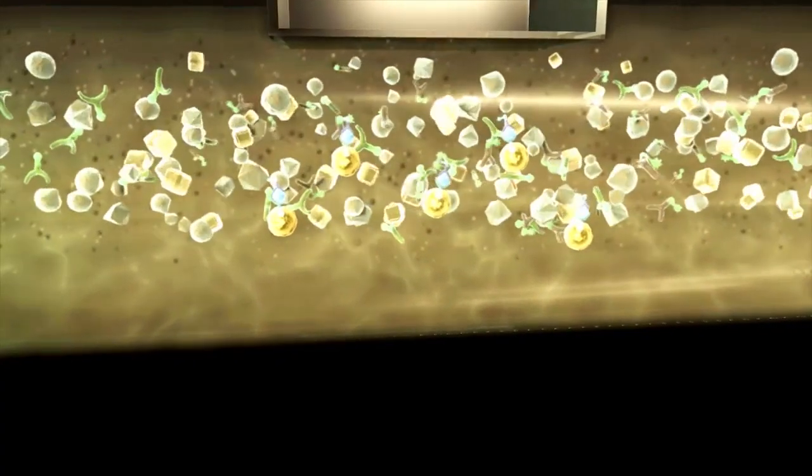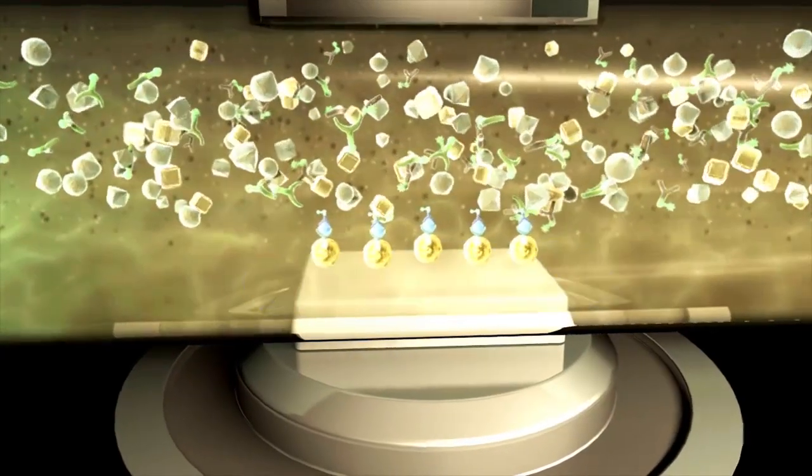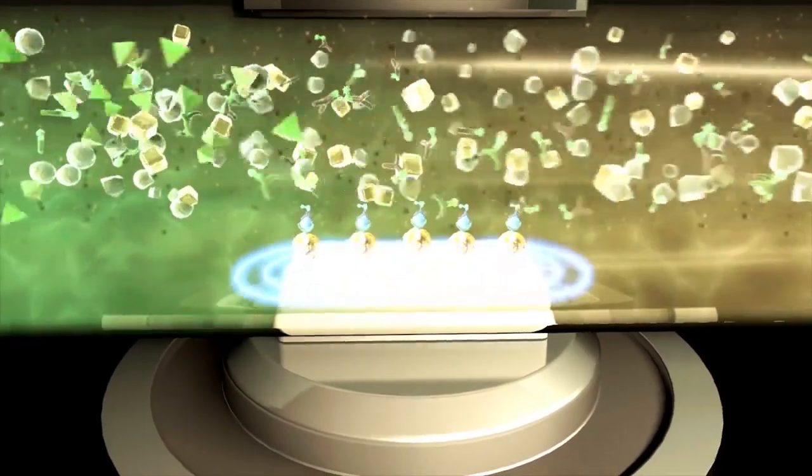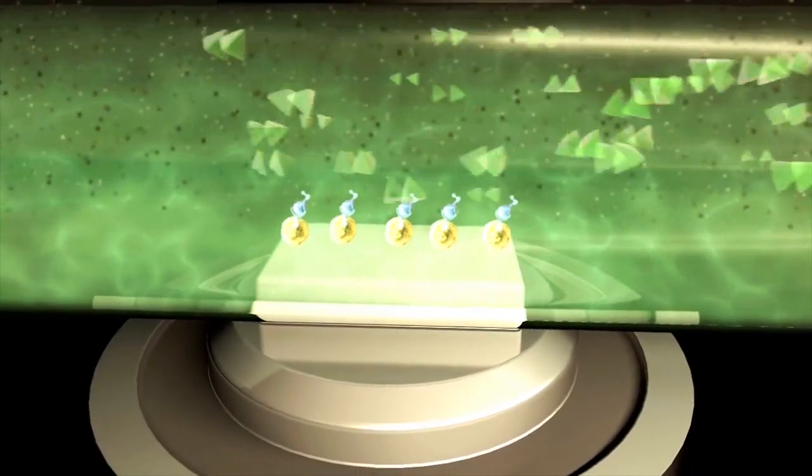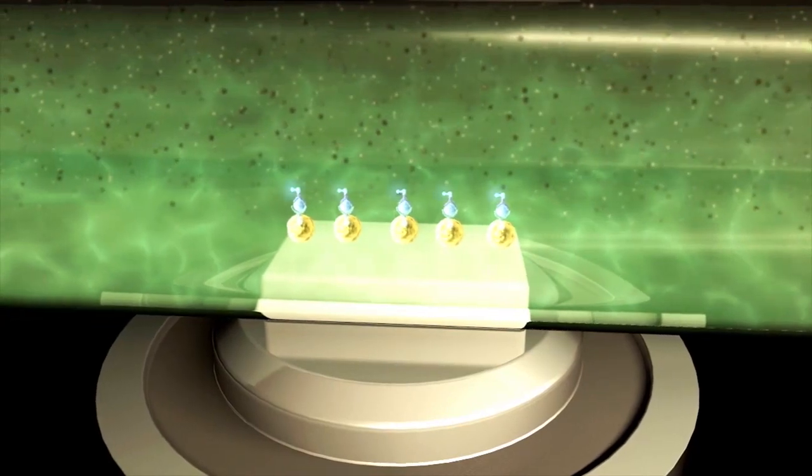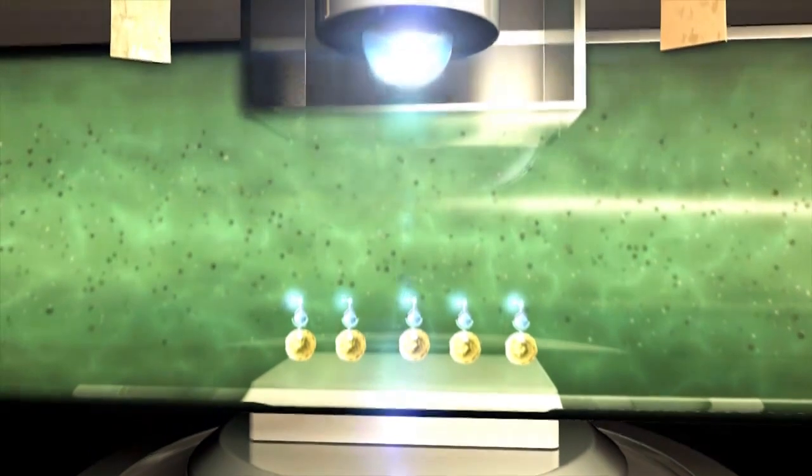This is how ECL works. Magnetic beads capture the target analyte. The immunoassay complexes are transferred into the measuring cell. The magnetic block anchors the target complexes while the free remaining particles are washed away. A reagent to support the controlled ECL reaction is introduced. Voltage is applied and the emission of light is detected by a highly sensitive detection unit.